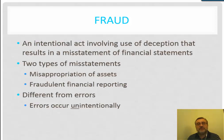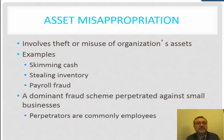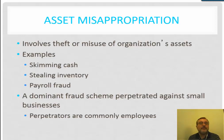There are two types of fraud that we focus on. The first is misappropriation of assets, and the second is fraudulent financial reporting. When we talk about asset misappropriation, we're basically talking about employees stealing assets from the organization. Examples include skimming cash, stealing inventory, payroll fraud, and an executive misusing an expense account. A dominant fraud scheme perpetrated against small businesses is asset misappropriation.